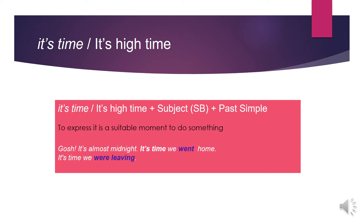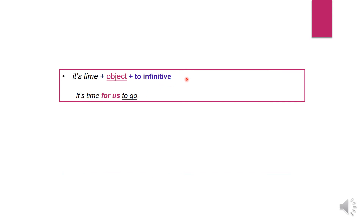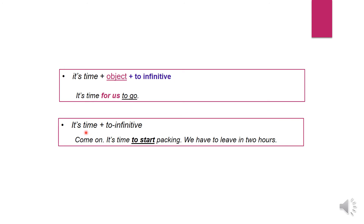It's time / it's high time. After 'it's time' or 'it's high time', you use a subject and past simple. This pattern is used to express that it's a suitable moment to do something. For example, 'It's almost midnight — it's time we went home' or 'it's time we were leaving.' Another possibility is to use 'it's time' followed by an object and then to-infinitive: 'It's time for us to go.' Or 'it's time' followed by to-infinitive: 'Come on, it's time to start packing — we have to leave in two hours.'